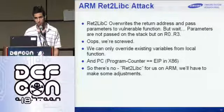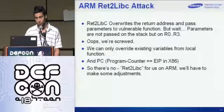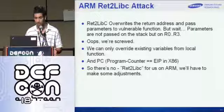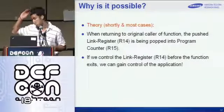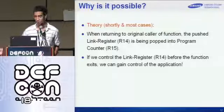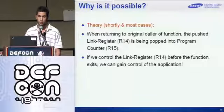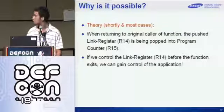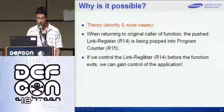So ret2libc overrides the return address and passes parameters to a vulnerable function. But we can't pass parameters on the vulnerable function because we need to store it in R0. We can only override existing variables from the local function — it depends on which function has the vulnerability. We can also override the PC, the program counter, so that's what we'll use to get full control of the application. There's no real ret2libc attack on ARM — we'll have to make some adjustments. When entering a vulnerable function, R14 is being popped into the PC at the end of the function. So if you can override R14, at the end of the function it will be popped to PC, giving you control of the code.